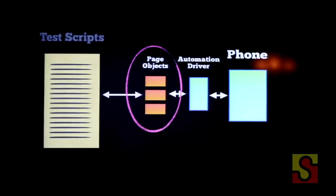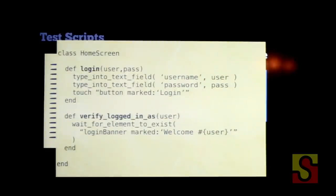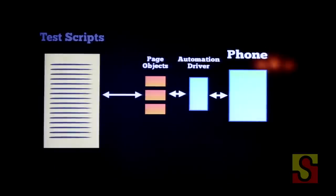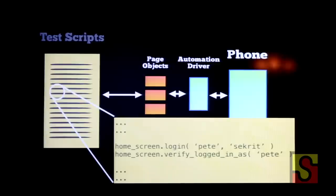So what does one of these page objects look like? When you look at it, a lot of this is the same code as before — I've still got my typing into text fields and my touching on buttons — but it's been encapsulated in a nice way. It's being represented using a nice interface, descriptive names and a descriptive class. If I've got one of these page objects, let's have a look at what my test scripts look like. I would argue this is a lot easier to read — I don't think I have to explain what this code is doing because it's Ruby.